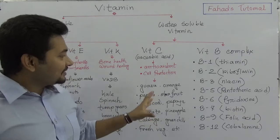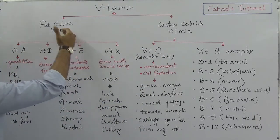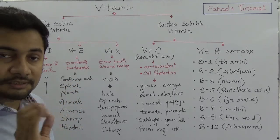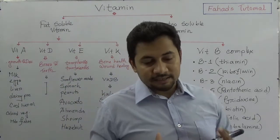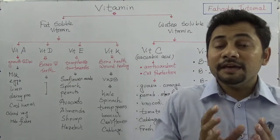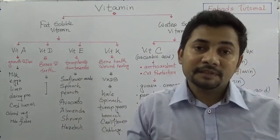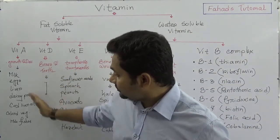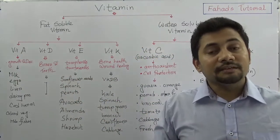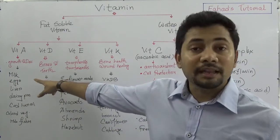Under fat-soluble vitamins, there are four types: vitamin A, D, E, and K. Vitamin A is very important for growth and development and also for good sight and vision. It can be found in many foods available in our day-to-day life — milk, eggs, liver, dairy products, cod liver oil, colored vegetables, mola fish, and yellow fish.